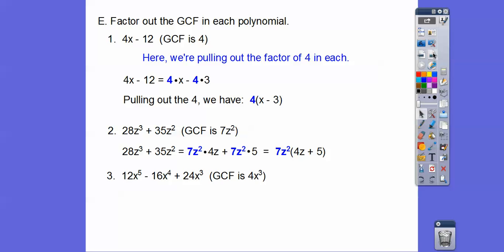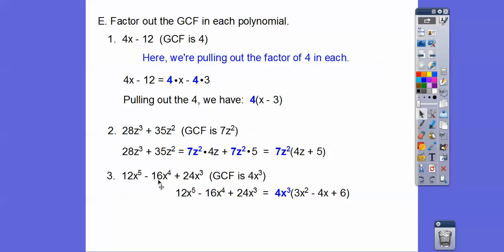Let's try one more where I give you the GCF. Rewrite using 4x³: 4x³ times 3x² gives the first term, 4x³ times 4x gives the second, and 4x³ times 6 gives the third. When we pull out the 4x³, we're left with 3x² minus 4x plus 6. If we redistributed back, 4x³ times 4x gives 16x⁴, and 4x³ times 6 gives 24x³ — confirming the factoring.